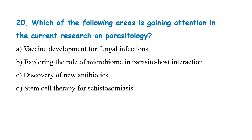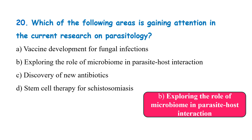Which area is gaining attention in current research on parasitology? Vaccine development for fungal infections, exploring the role of the microbiome in parasite-host interaction, discovery of new antibiotics, or stem cell therapy for schistosomiasis? The correct answer is exploring the role of the microbiome in parasite-host interaction.